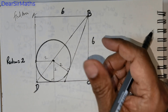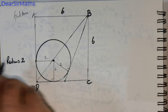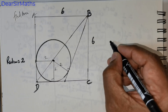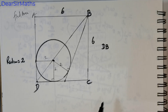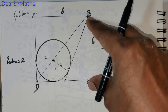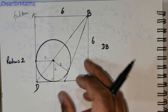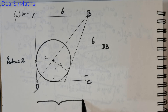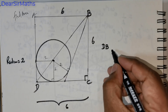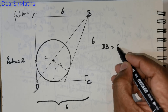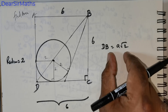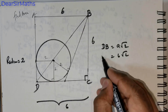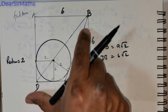Let me start by finding the length of DB. This angle is 90 degrees, so this side is 6 and this entire length is 6 units. Therefore, the diagonal DB is going to be A√2 — that's the formula. In this case, it's going to be 6 times √2. So this entire length is going to be 6√2.